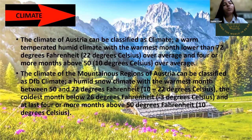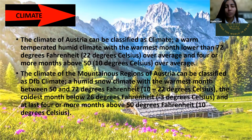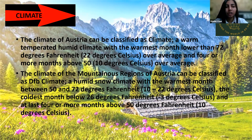The climate of Austria can be classified as a warm temperate humid climate, with the warmest month lower than 72 degrees Fahrenheit. The climate of the mountainous region of Austria is classified as a humid snow climate, with the warmest month between 50 to 72 degrees Fahrenheit.